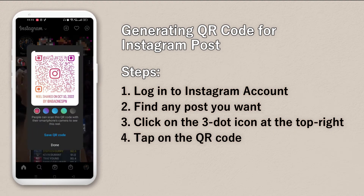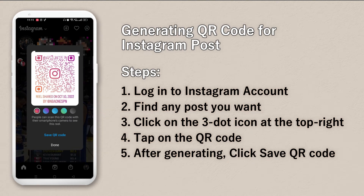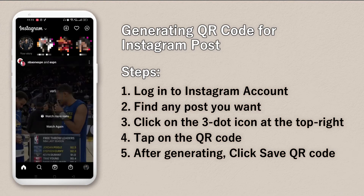Just click on it and it will generate a QR code so people can scan it to see this reel or post. You can even change the color, save the QR code to your images, and then share it with other people to access the post.